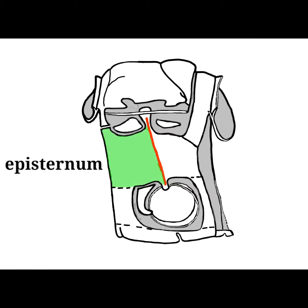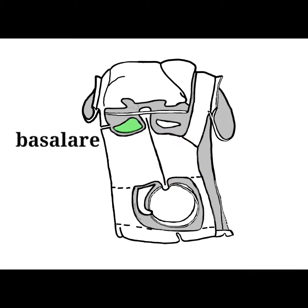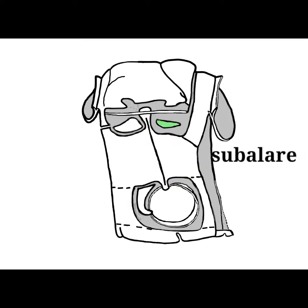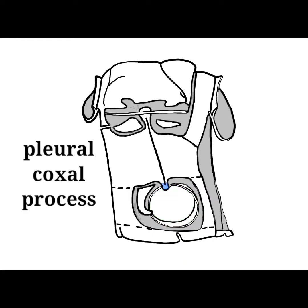The pleural suture divides the pleuron into the anterior episternum and posterior epimeron. The basalare and subalare are pleurites where the muscles of the wings are inserted. The pleuron has a cavity where the coxa is attached, called the coxal cavity. Near it is the pleural coxal process.